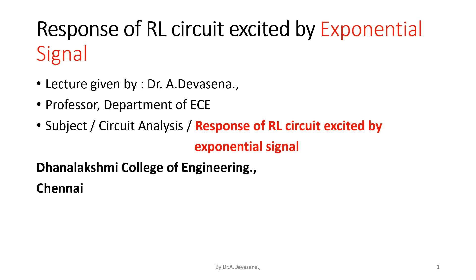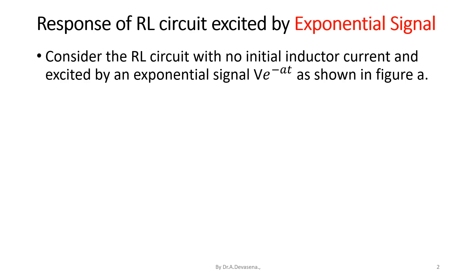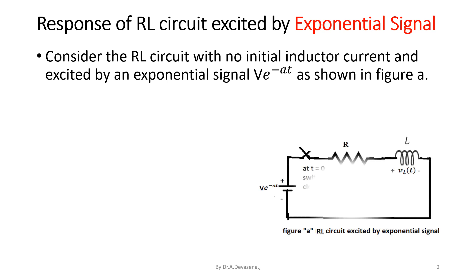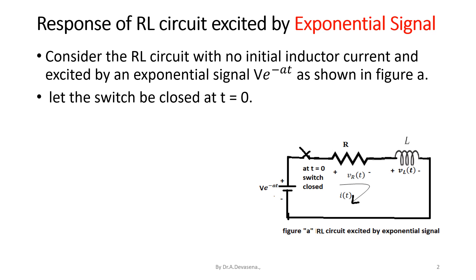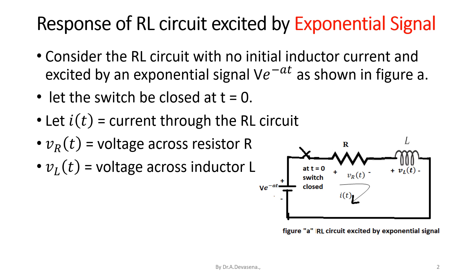Under the unit transient analysis. Consider the RL circuit with no initial inductor current, excited by an exponential signal V·e^(−at), as shown in Figure A. Let the switch be closed at time t = 0. Let I(t) be the current flowing through the RL circuit, V_R(t) be the voltage drop across resistor R, and V_L(t) be the voltage drop across inductor L.